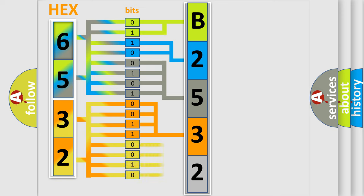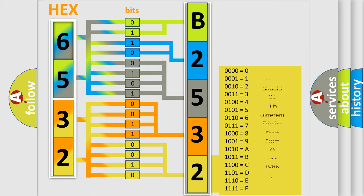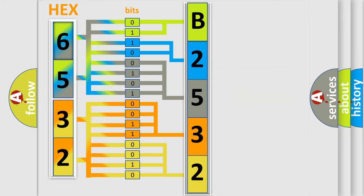A single byte conceals 256 possible combinations. We now know in what way the diagnostic tool translates the received information into a more comprehensible format.